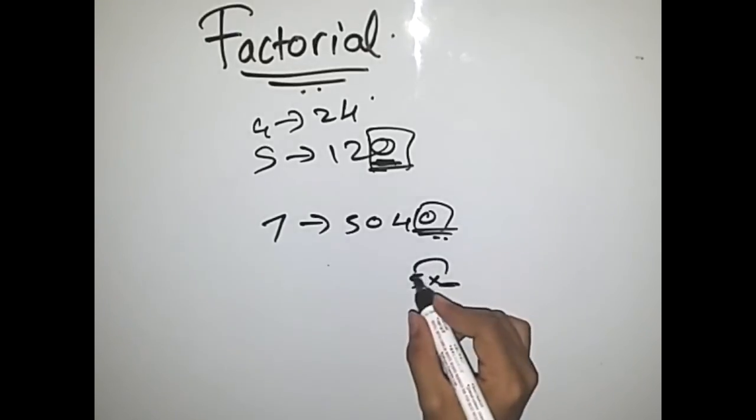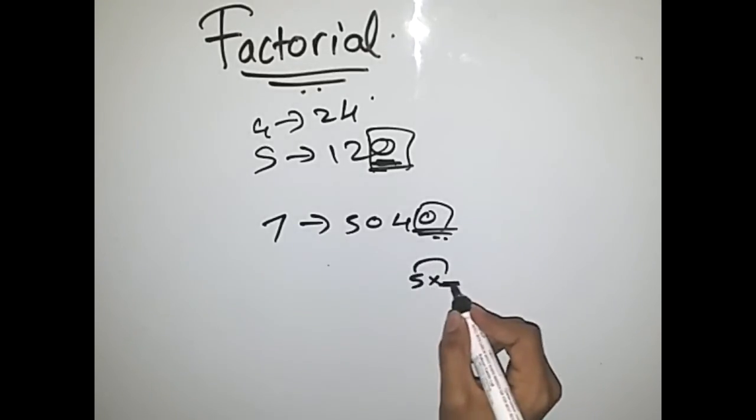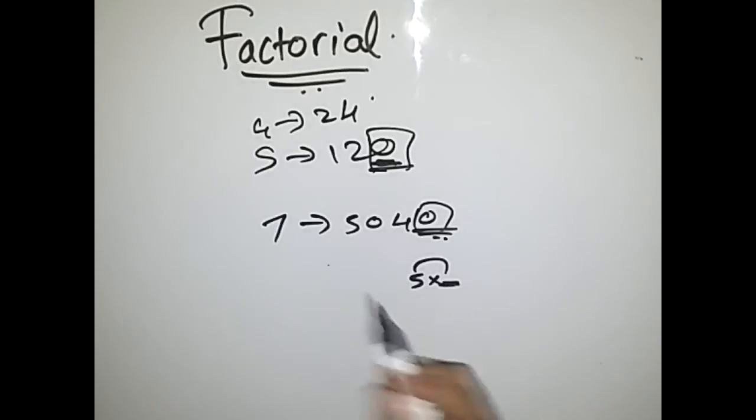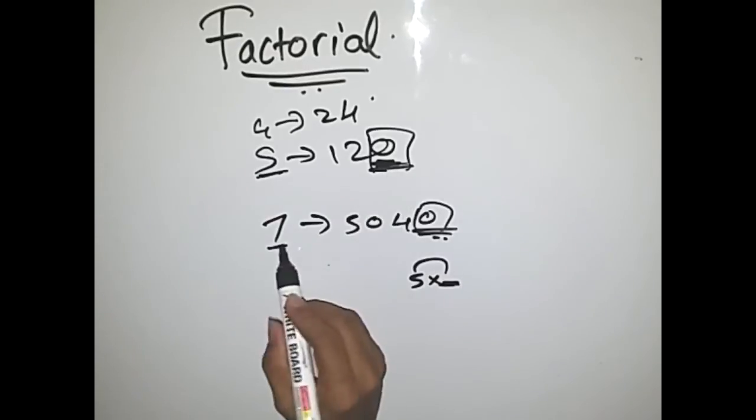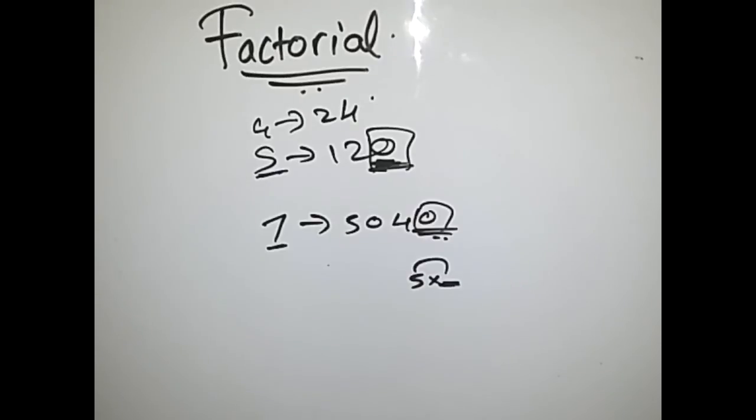You always get a zero at the end if you multiply 5 with any even number. In 7 factorial, we do 7 × 6 × 5 × 4. There is a multiple of 5, that's why we get a zero at the end.